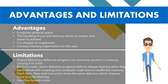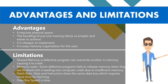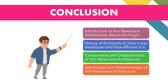My name is Vishal Krishna Mahajan, role number five, and I will be discussing the advantages and limitations of Von Neumann architecture. Advantages: it requires less physical space; handling just one memory block is easier and simpler; it is cheaper to implement; and it provides easy memory organization for the user. Limitations: a defective program can overwrite another program in memory causing it to crash; some programs fail to release memory when finished, leading to crashes due to insufficient memory; data and instructions share the same data bus, requiring more time for fetching; and the data bus speed is slow.